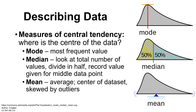Our mode is the value that occurs most frequently. So how many people were measured to be five foot five? If there are more people who are five foot five than any other height measurement, then that would be our mode.